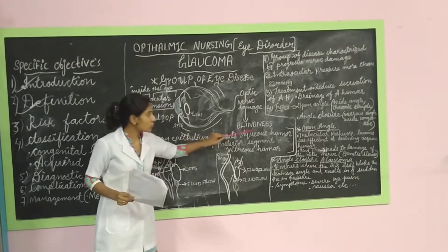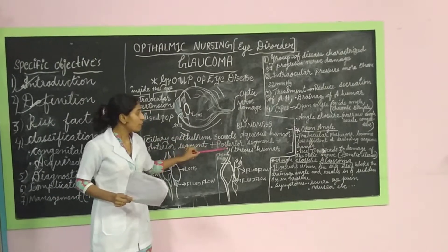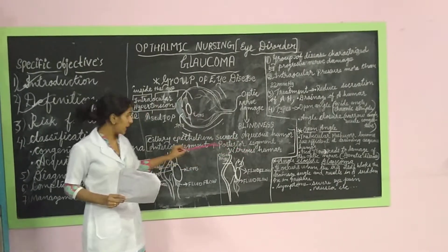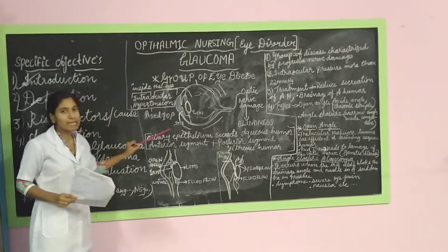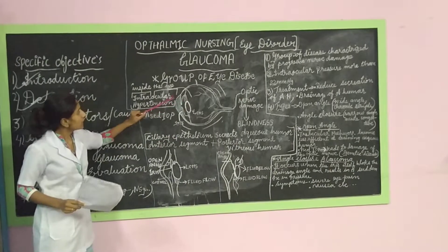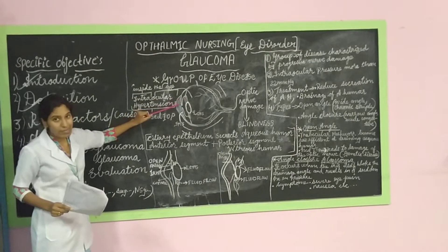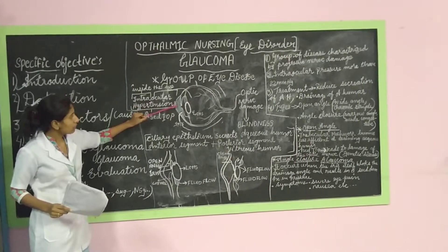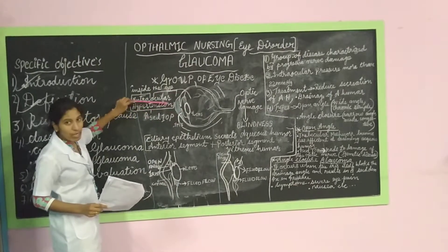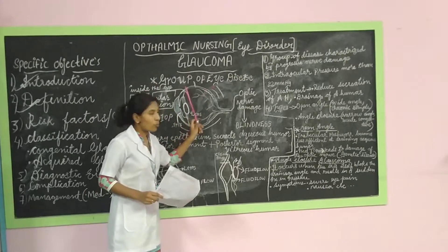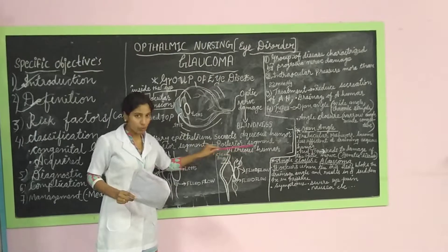In the anterior segment of the eye, aqueous humor fluid will be there, and in the posterior segment of the eye, vitreous humor fluid will be there. Aqueous humor fluid is created by the ciliary epithelium. This aqueous humor fluid is watery and transparent, and it fills the anterior segment of the eye.